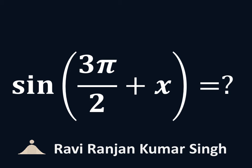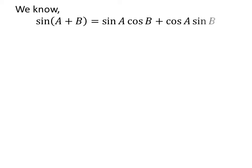In this video, we will learn to find the value of sine of 3 times pi upon 2 plus x. As we know, the trigonometry identity sine of a plus b is equal to sine of a times cosine of b plus cosine of a times sine of b.